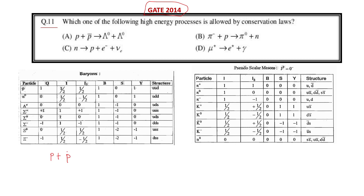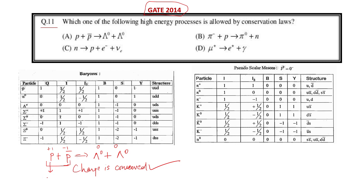For the first reaction, a proton and an antiproton are decaying to lambda zero. Checking charge: plus one and minus one on the left gives zero, and zero on the right, so charge is conserved on both sides.